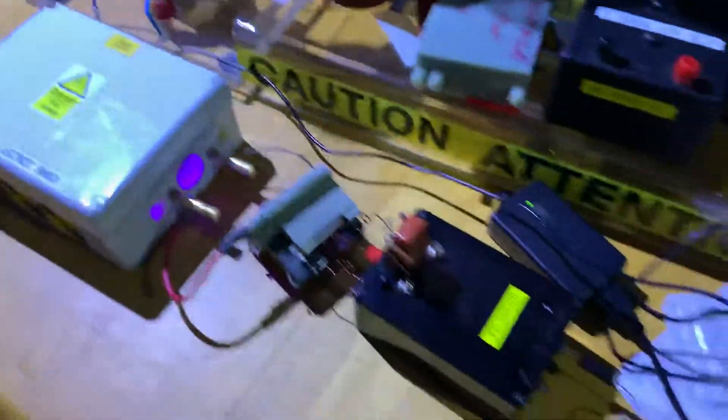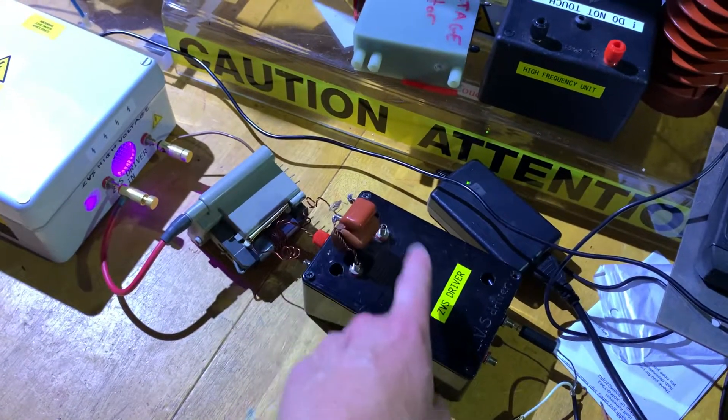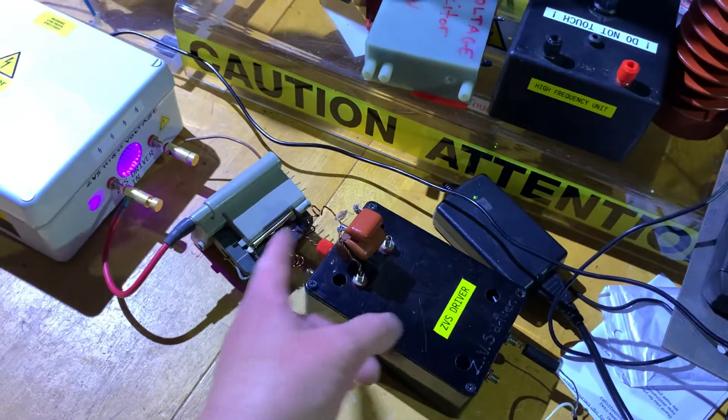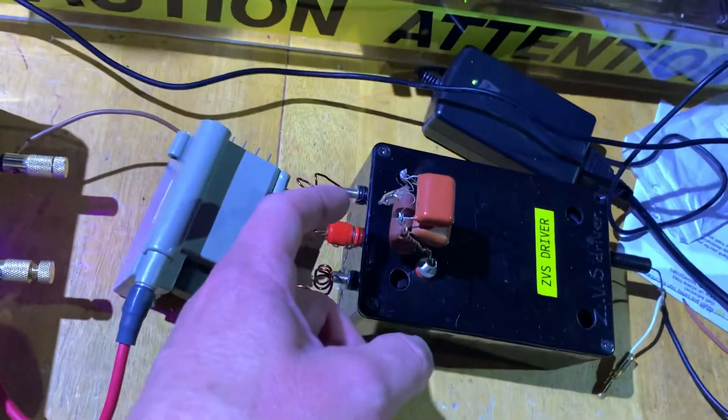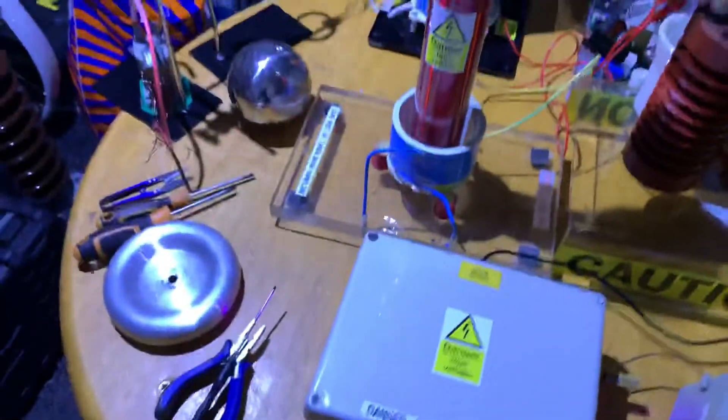12 volts in for the fan just there, and of course 12 volts going into the ZVS. This is the capacitors on the ZVS which changes the frequency. Got a bit of a neon bulb there just to flicker on and off which takes a bit of back spike. So let's get it on.